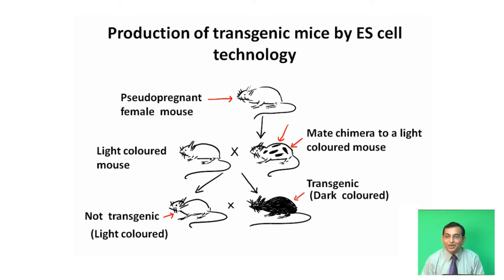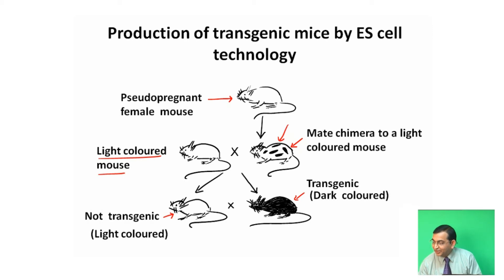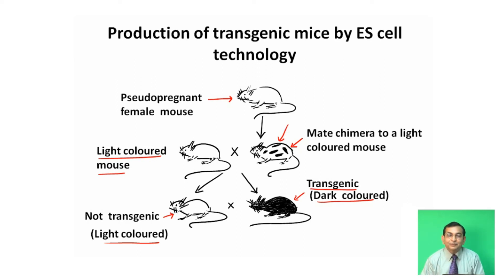These chimeras are mated with light-colored mice. After mating, in the next generation, we obtain transgenic dark-colored mice as well as non-transgenic light-colored mice. This transgenic dark-colored mouse contains a transgene — that is, all the cells have got transgenes, which will be inherited to the next generation.